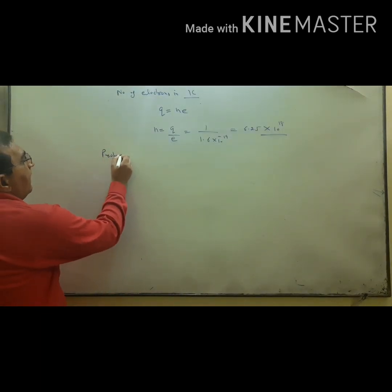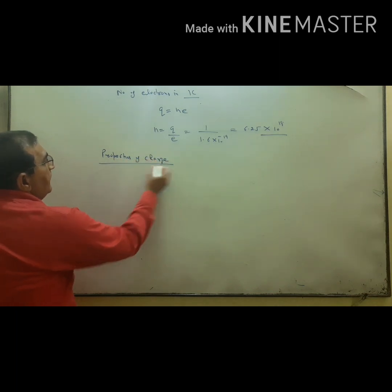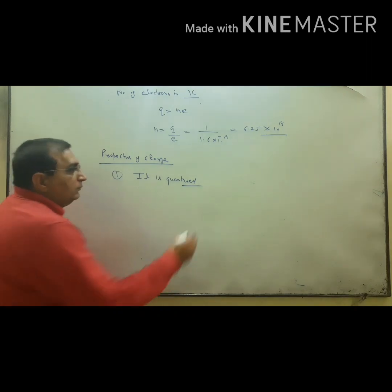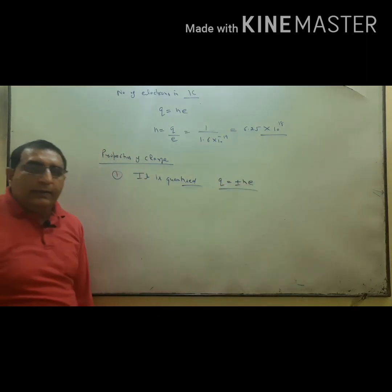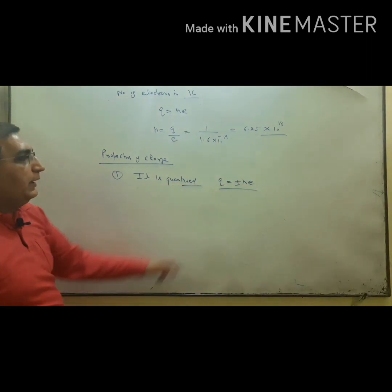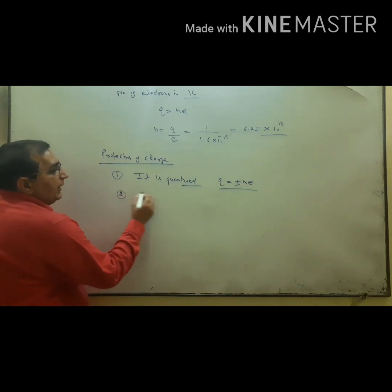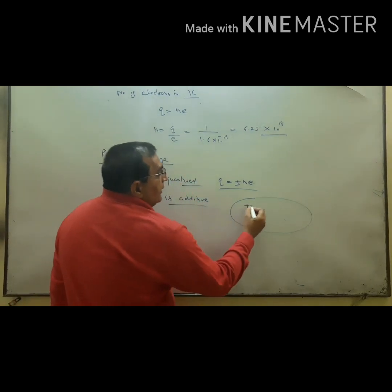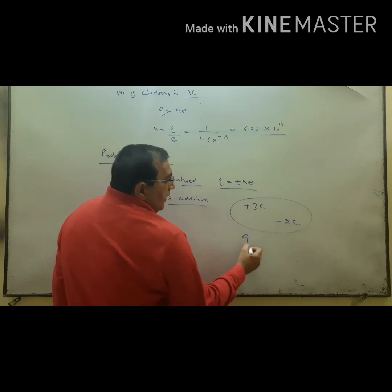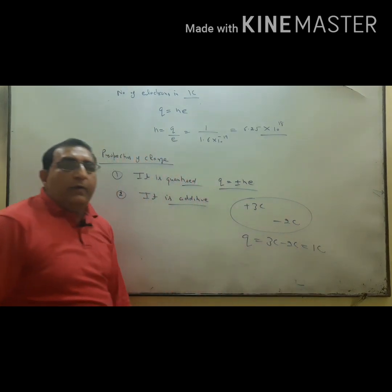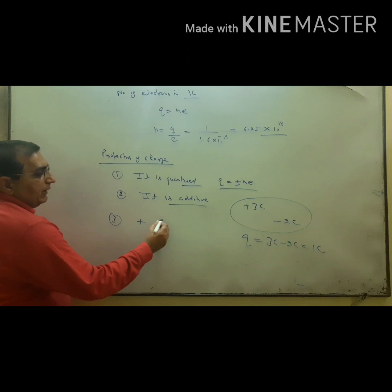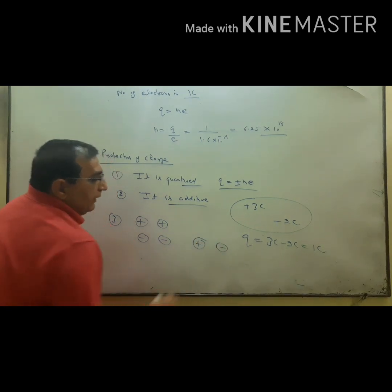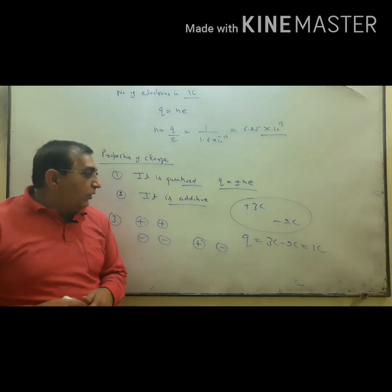Properties of electric charge: First, it is quantized — Q = ±Ne; charge on a body is fixed and is an integral multiple of the smallest unit. Second, it is additive — for example, if a body has charges of +3 coulombs and −2 coulombs, the net charge is 1 coulomb. Third, like charges repel each other and unlike charges attract each other.